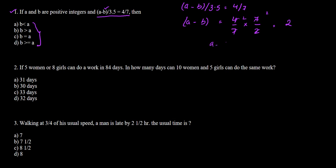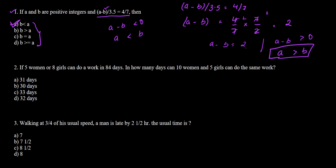This comes out to 2, so a minus b is equal to 2. Since 2 is greater than 0, a minus b is also greater than 0, meaning a is greater than b. If a minus b were less than 0, a would be less than b; if equal to 0, a would equal b — but neither of those conditions holds here.